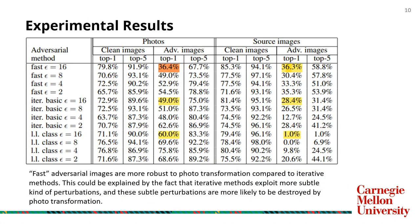From the experimental results, the first finding concerns robustness to photo transformation. The accuracy of the fast method increases only 0.1% after transformation to photos, whereas iterative methods increase a lot. This means fast adversarial images are more robust to photo transformation than iterative methods, because iterative methods exploit more subtle perturbations that are more likely to be destroyed by photo transformation.